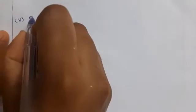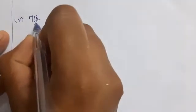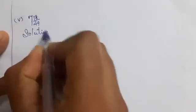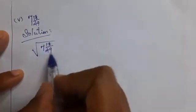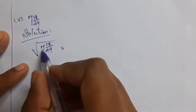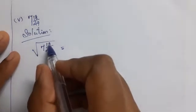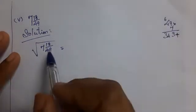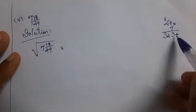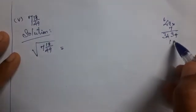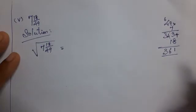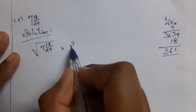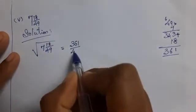5th part: square root of 7 and 18 by 49. This is in mixed fraction form. First, we convert it into a fraction: 7 into 49 plus 18. 49 into 7 is 343 plus 18, giving 361 divided by 49.